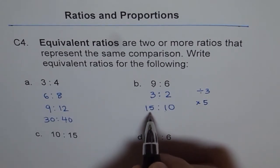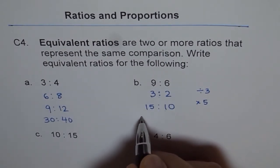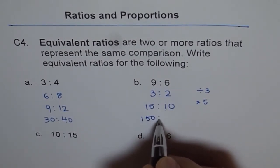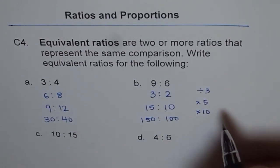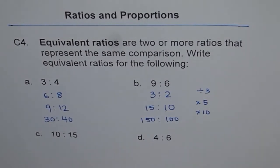We could multiply this by 10. So we get 150 is to 100. That is when I multiply this by 10. So we get the same equivalent ratios.